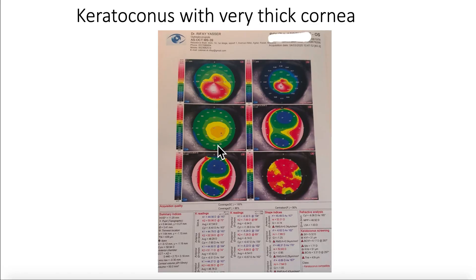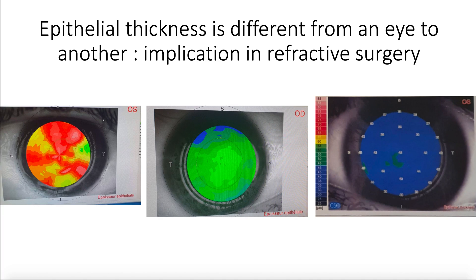We also see keratoconus cases with a very thick cornea, showing thinning at the apex. Epithelial mapping shows us that corneas do not all have the same epithelial thickness. Previously, we thought the corneal epithelium was 55 microns in the center and 65 in the periphery, but this is not true — we see values of 43 in some areas and over 65 in others. The epithelium differs from one eye to another, and this has implications for refractive surgery. When performing transepithelial PRK, we must know the epithelial thickness beforehand to avoid over- or under-treatment.